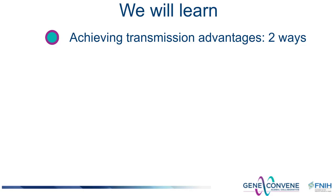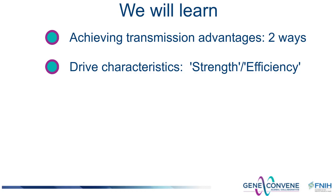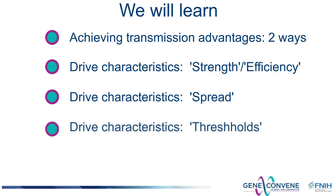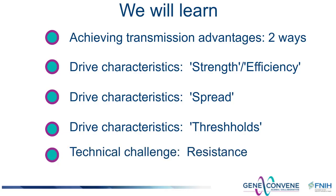We will look more closely at drive in order to introduce the concept of weak and strong drive. We will consider a driving allele or transgene in one and then multiple populations and look more closely at the concept of spread. We will also consider the concept of drive thresholds. And finally, we will briefly consider one of the major technical challenges — avoiding, delaying, or mitigating the emergence of resistance to drive.